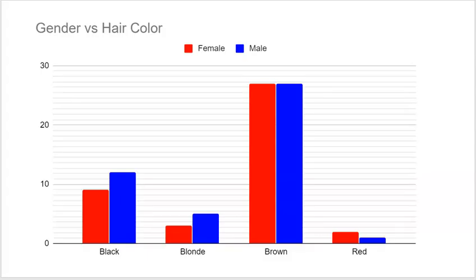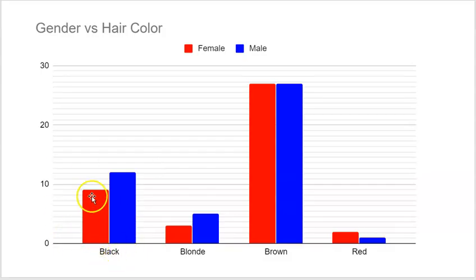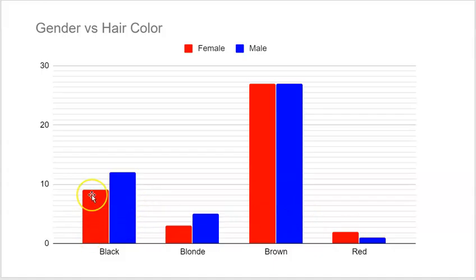Here are side-by-side bar charts. We notice clear double bars — one for female, one for male — broken down across the categories of hair color. We can see people with black hair: how many are girls, how many are boys. Then blonde, brown, and red. This is a frequency bar chart showing counts. For example, there are nine females with black hair and 12 boys with black hair.